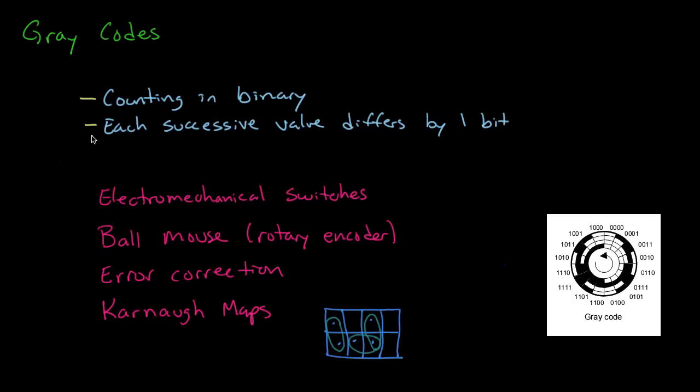Gray codes come up in devices such as electromechanical switches. These are things like rotary switches where you might have a dial with 8, 10, or 16 positions arranged in a circle, and you want to select any one of those positions.